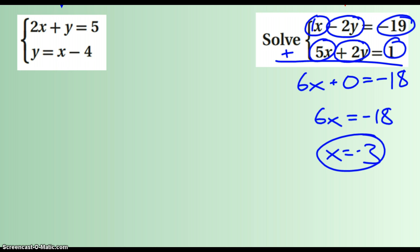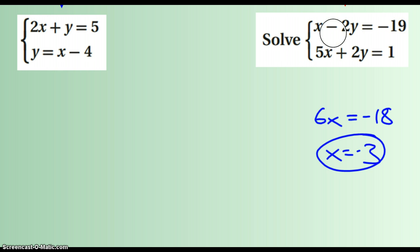So now I can use my negative 3, and I can plug this into any equation that I want to. Probably, let's go to the bottom one. It looks like there's more positive numbers. So if I plug this in here, I get 5 times negative 3, that's negative 15 plus 2y equals 1.